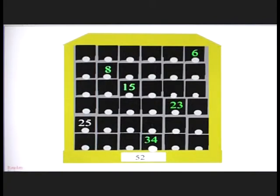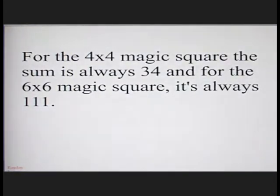Next we push 34, giving us a total of 86. And finally we have no choice but 25 and gives us a total of 111. For the 4 by 4 magic square, the sum is always 34. And for the 6 by 6 magic square, it's always 111.